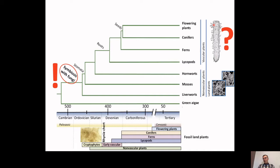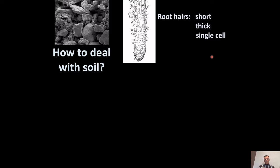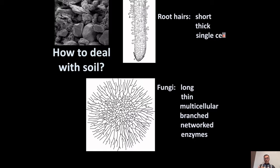As we look at later, more recently evolved groups of plants, we start dealing with structures called roots. The problem is how do you deal with soil? Soil is extremely complex — a very challenging environment with lots of pores and cracks where nutrients and water are hidden away. Plants can grow little hairs on the surface of roots — called root hairs — but they tend to be quite short, less than a centimeter, and quite thick and stubby in form, consisting of a single cell.